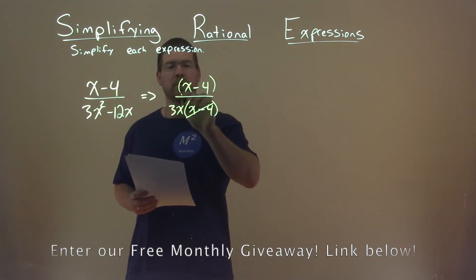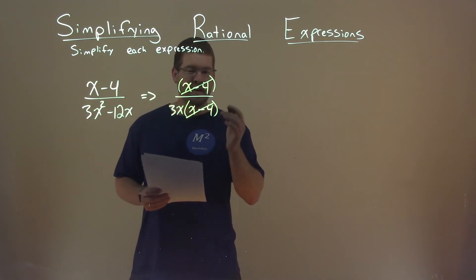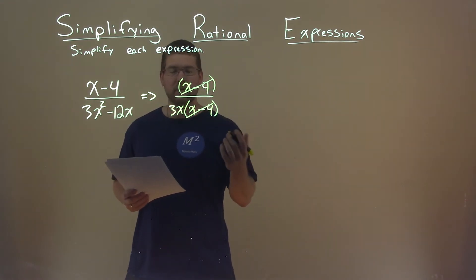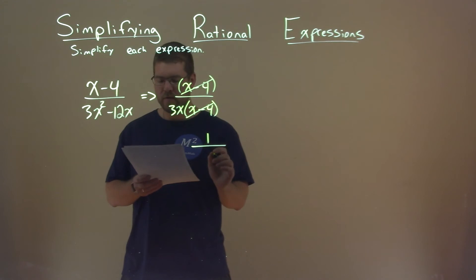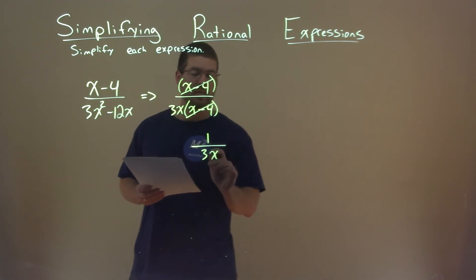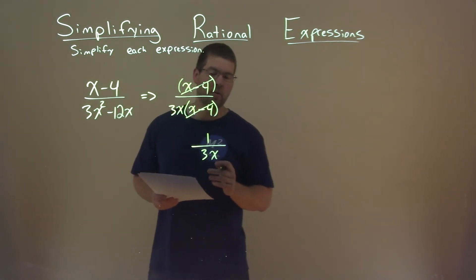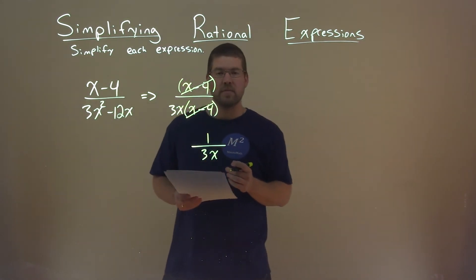x minus 4 and x minus 4 cancel. So what are we left with? Well, we still have a 1 in the numerator, but the denominator is just 3x. And so 1 over 3x is our final answer.